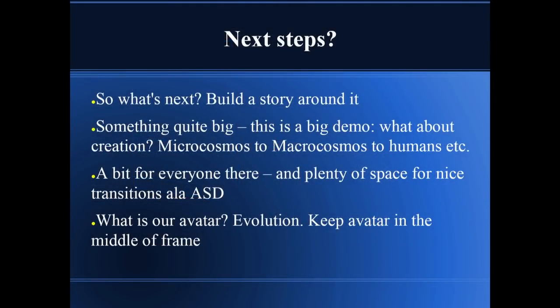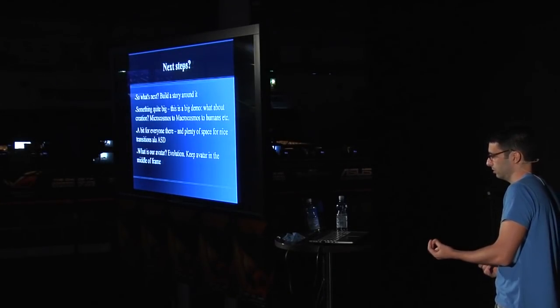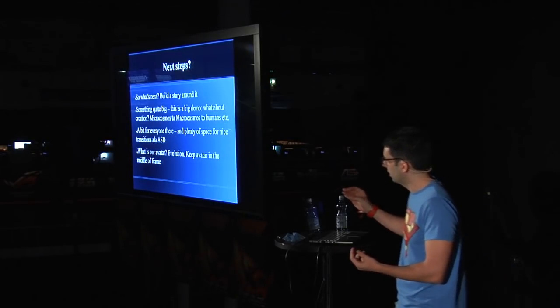We had these two effects as building blocks, so we needed to think of a story around them. I like to have an avatar in our stories — something you follow, an object that evolves or runs away. If you've seen our demos you notice it quite a lot. Also leave space for transitions, which are our trademark. We thought of something like microcosmos to macrocosmos — an evolution of something. Having this idea gives me the ability to think of a story and progress it.